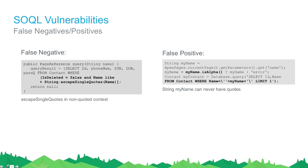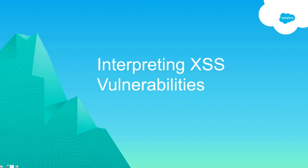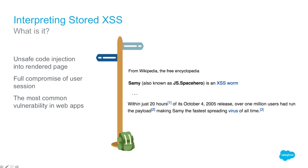Now let's talk about cross-site scripting, or XSS. This is one of the worst and also one of the most common vulnerabilities in applications, and we want to detect it as early as possible in the development lifecycle. XSS happens when user input is unsafely injected into the output or into the page returned to the user. In terms of impact, cross-site scripting gives the attacker complete control over the user's session — they can modify anything on the page, steal data, and send requests on the user's behalf.